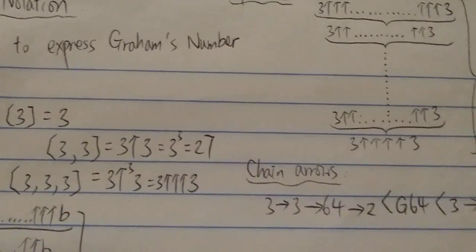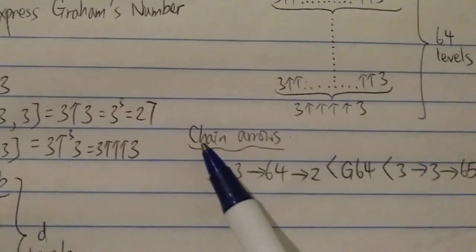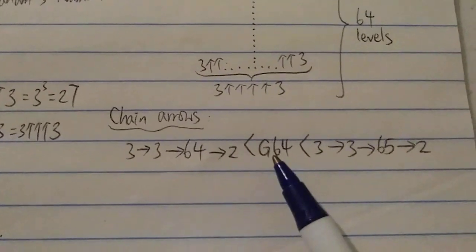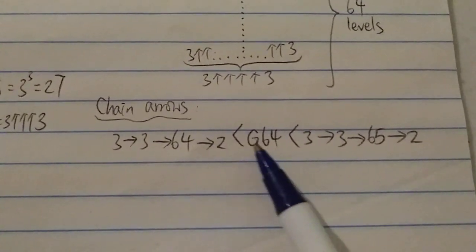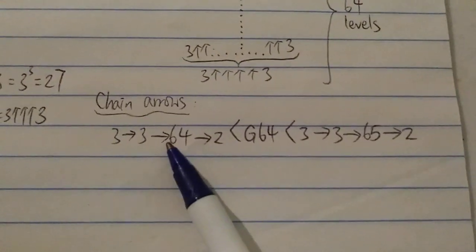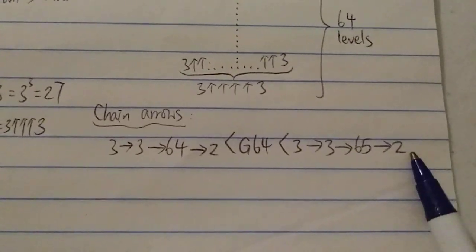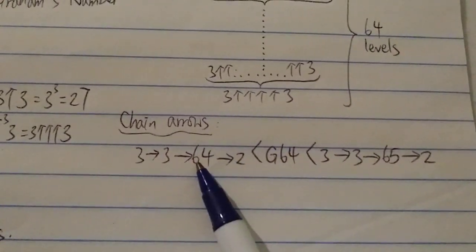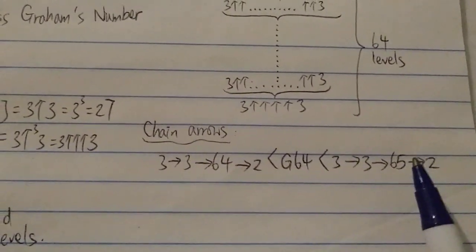Another way to represent Graham's number is of course the chain arrow notation. However, it's not precise. Graham's number G64 is somewhere between three-arrow-three-arrow-64-arrow-two and three-arrow-three-arrow-65-arrow-two. So it's not accurate — Graham's number is between this; it's bigger than this but smaller than this, though much closer to the lower bound.